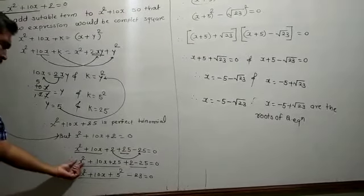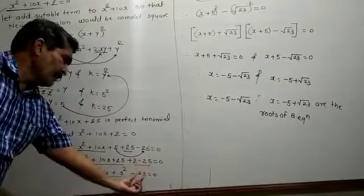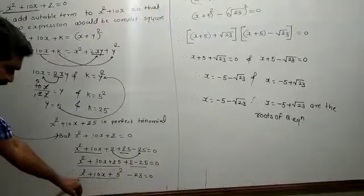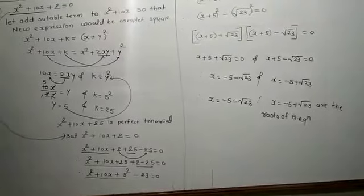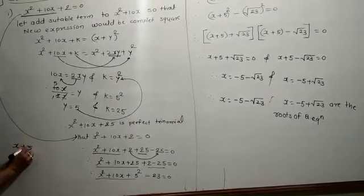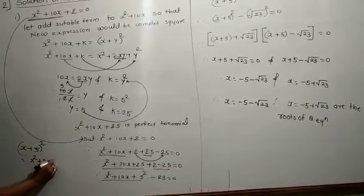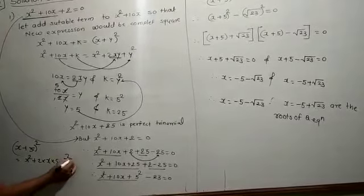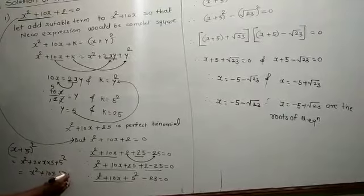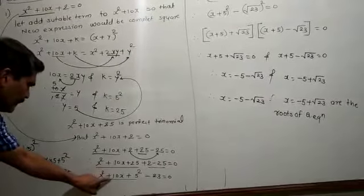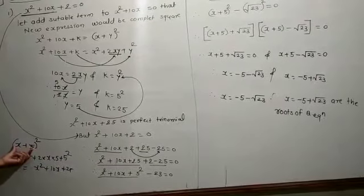Now, x squared plus 10x plus 25 equals (x + 5) squared. You can verify: expanding (x + 5) squared gives x squared plus 2 times x times 5 plus 5 squared, which equals x squared plus 10x plus 25. So x squared plus 10x plus 25 is the expression of (x + 5) squared.